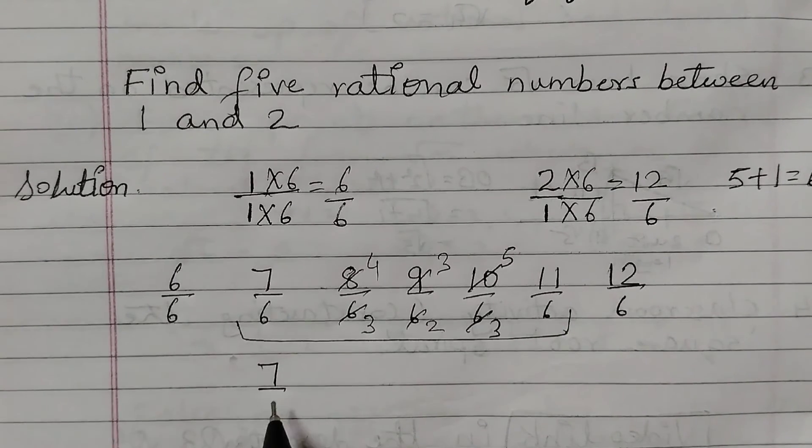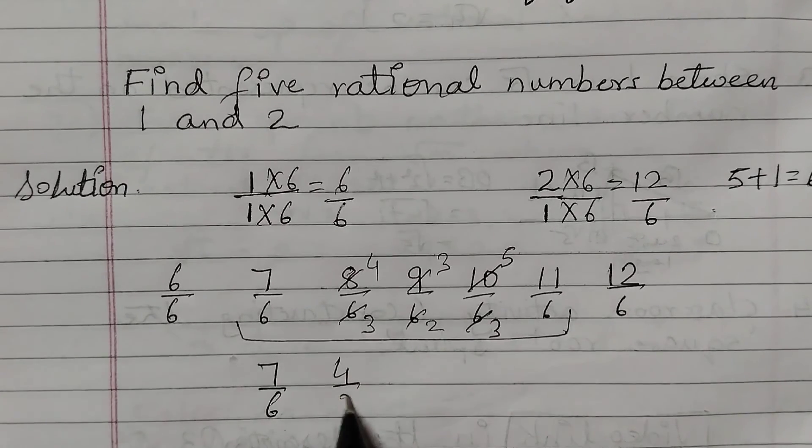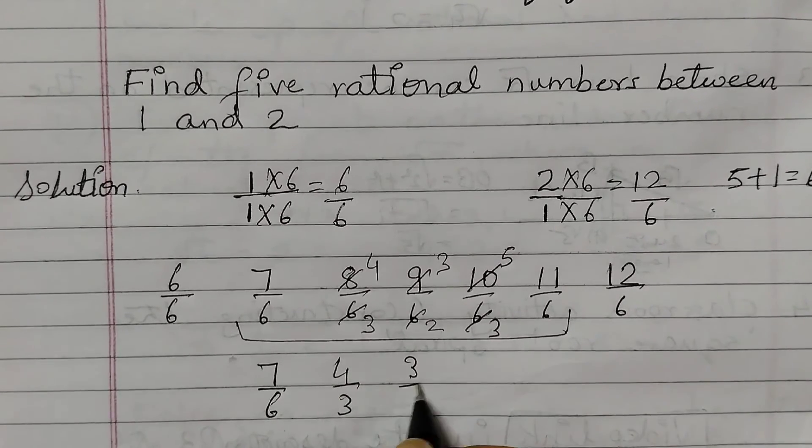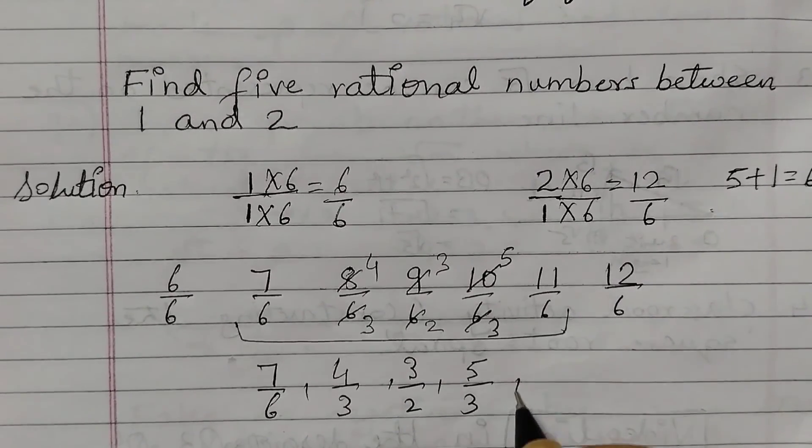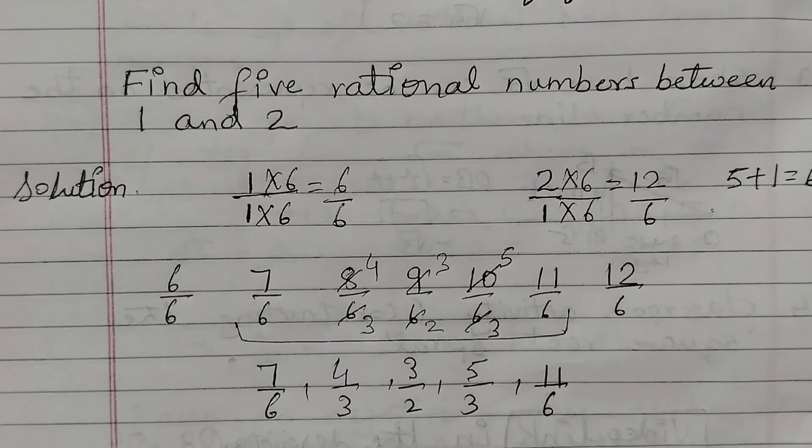So the 5 rational numbers would be 7/6, 4/3, 3/2, 5/3, and 11/6.